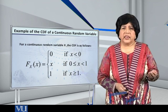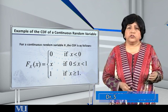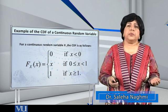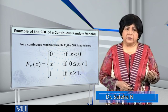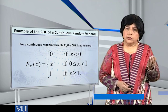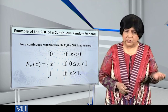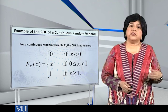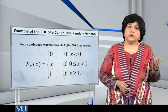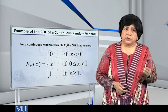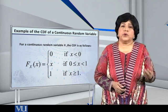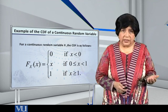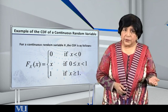So this example is of a continuous random variable x, whose CDF is given by F(x) equals 0 for all x values less than 0, F(x) equals x for all x values which lie between 0 and 1, and F(x) equals 1 for all x values greater than or equal to 1.